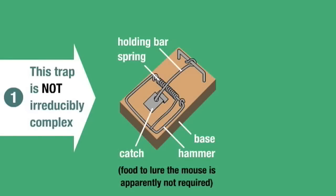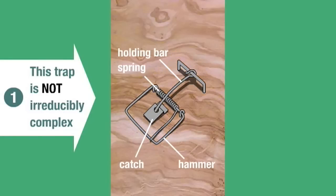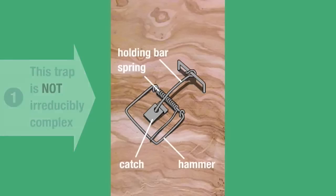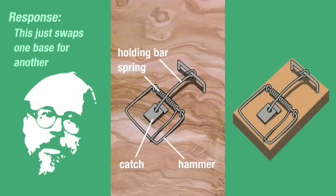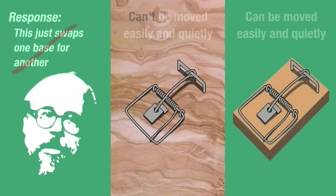Halfway through my video I showed that a standard mousetrap is not irreducibly complex, as Michael Behe claims. Because we can remove the base and fix the other parts to the surface on which it was resting. I refuted Behe's claim that this just swaps one base for another, pointing out that the standard trap and a trap fixed to one spot have significant differences.